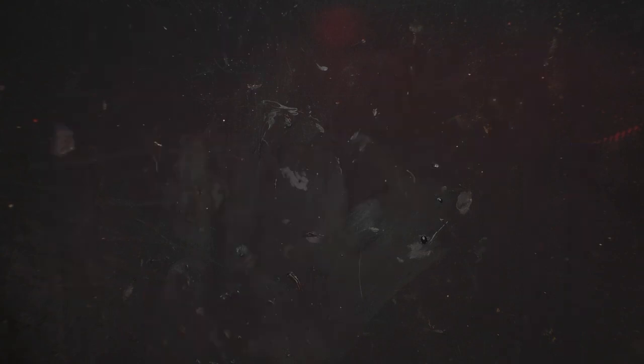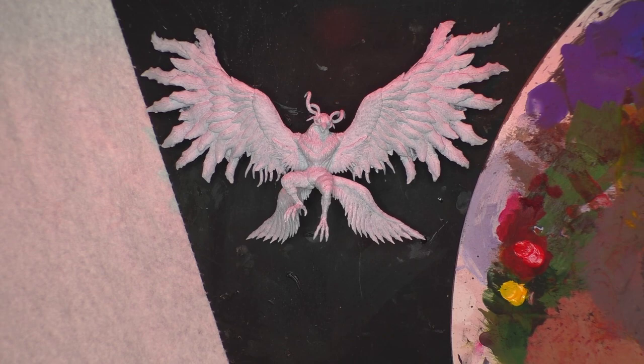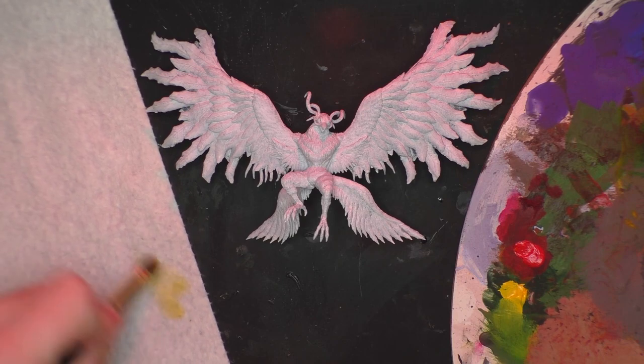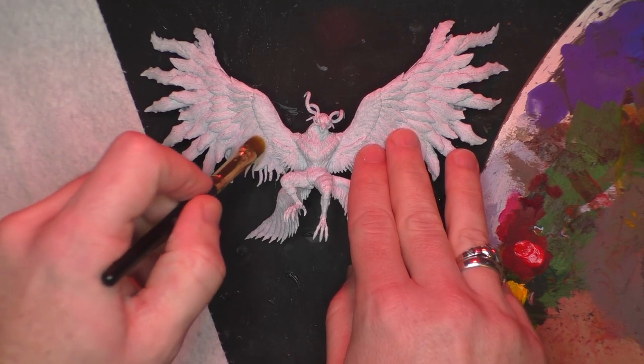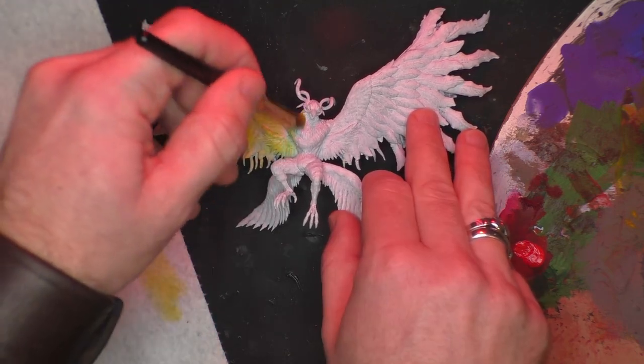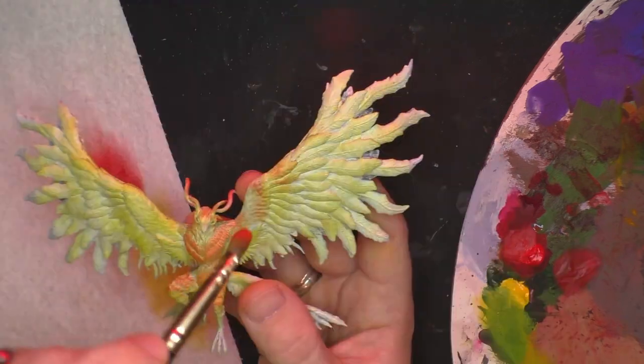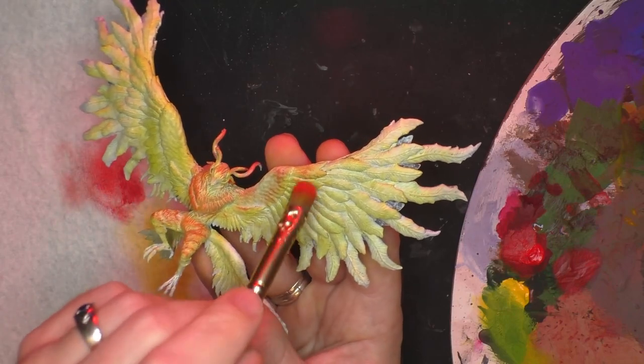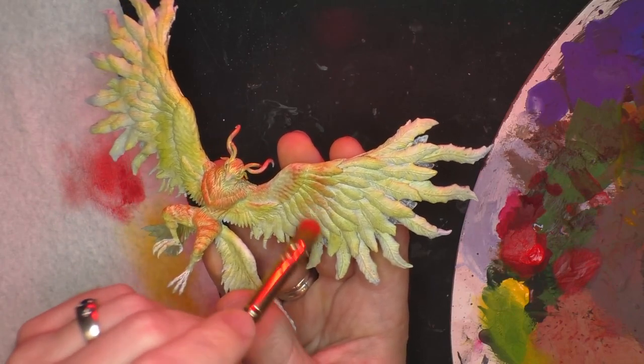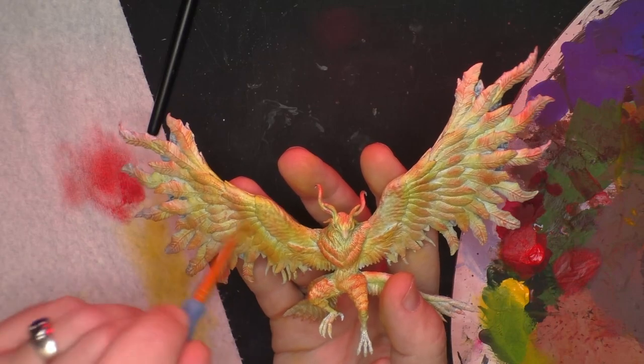On to the dry brushing. Oil paints. Exact same method that you use with acrylics. No difference whatsoever, except the paint is going to stay slightly wet. I primed with white because I wanted the core to look like that's where the heat, where the light was coming from, and I just went darker as it went out. I went from white to yellow to red, and then black on the very tips.